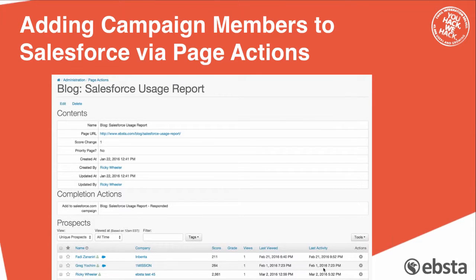Here's a page action — and with Pardot the options are endless. At the end of last year we spent a lot of time building a really great report around Salesforce usage, Salesforce admins, and Salesforce problems. We published it in December and sent it out to our database. We didn't want to gate it — we wanted to share it, make it viral — so we published it on our blog. But I really wanted to know who read that report. With Pardot page actions, I can say any user in our database that visits this page will automatically be added to a Salesforce campaign as 'Salesforce Usage Report Responded.' For me, that is just fantastic.